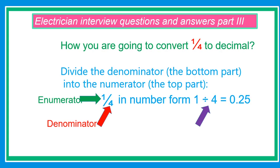How are you going to convert one fourth to decimal? Divide the denominator, the bottom part, into the numerator, the top part. Look at the example: 1 over 4 in number form, 1 divided by 4 equals 0.25.